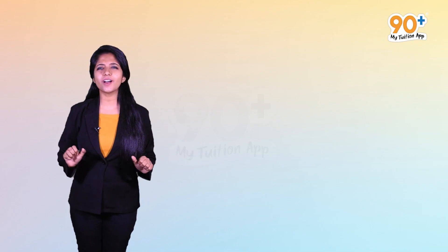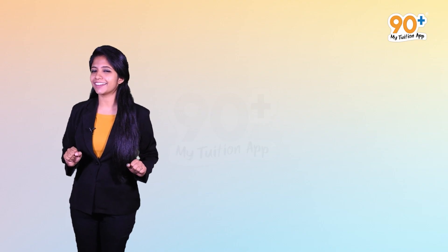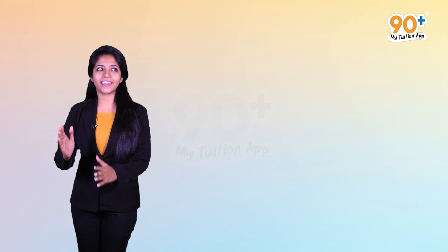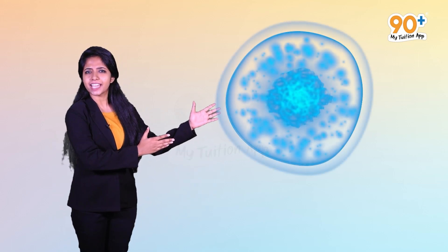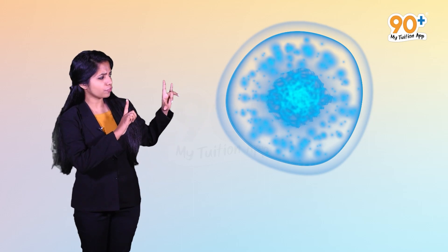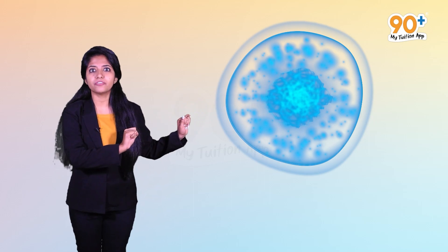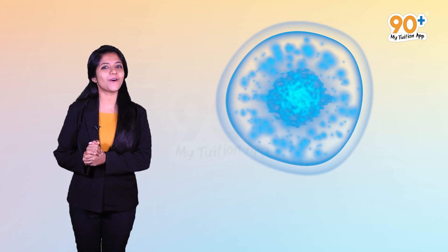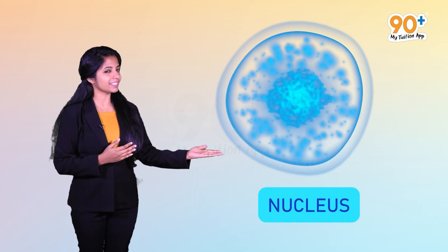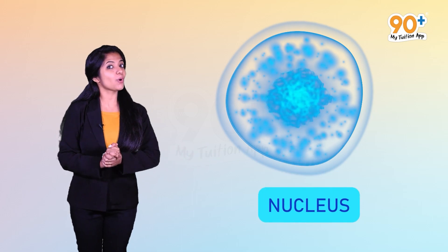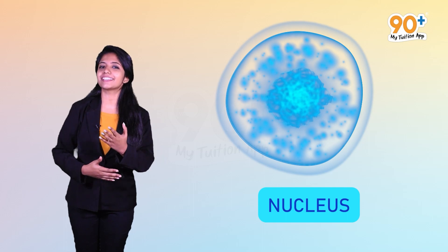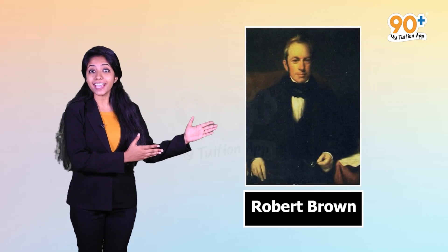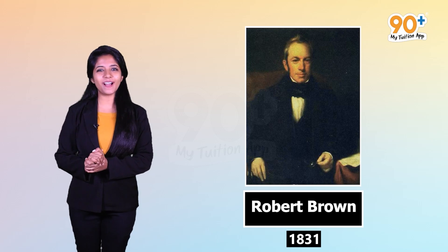We are talking a lot about cells. Don't you wish to take a look at it? This is a cell and if you look closely, you will find that within the cell, there is an important organelle known as the nucleus, which was found by the great scientist Sir Robert Brown in the year 1831.